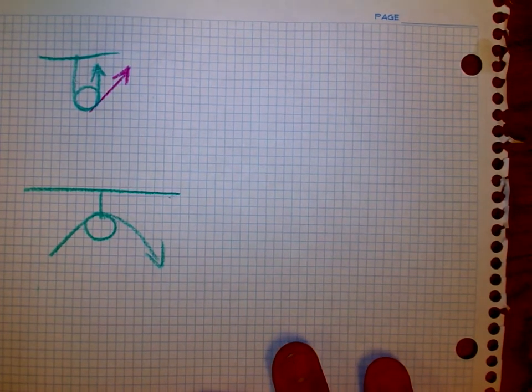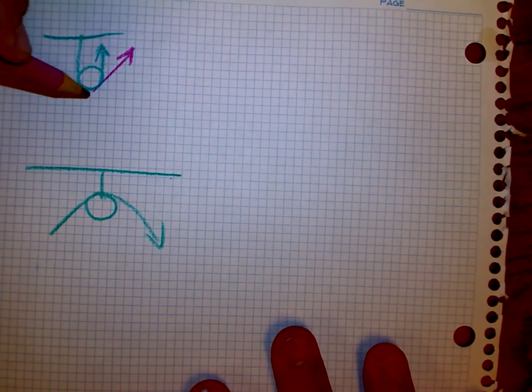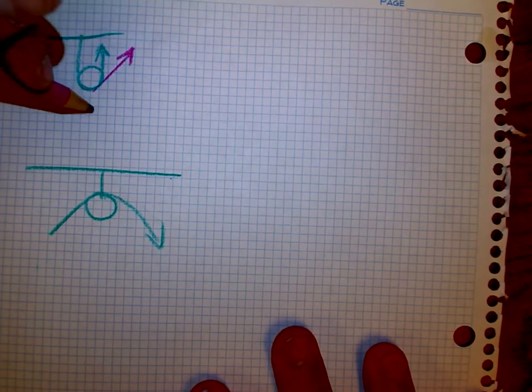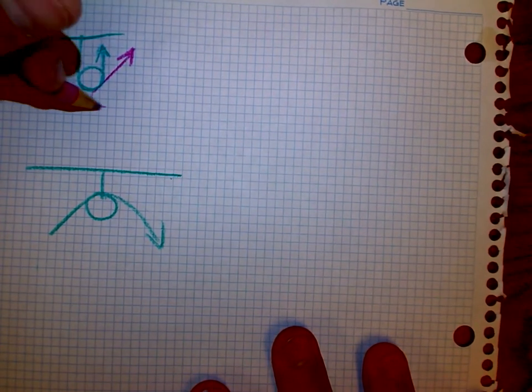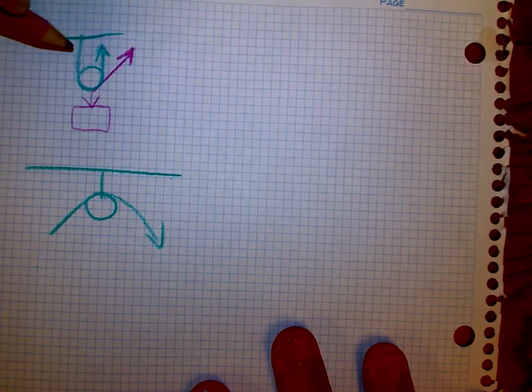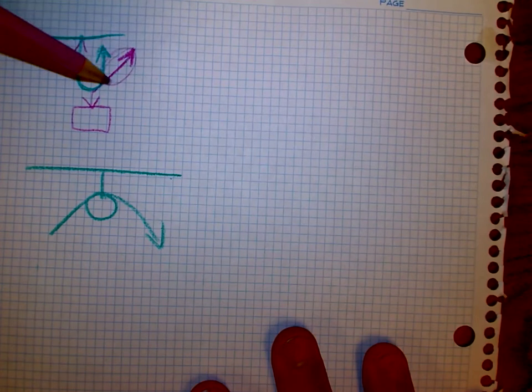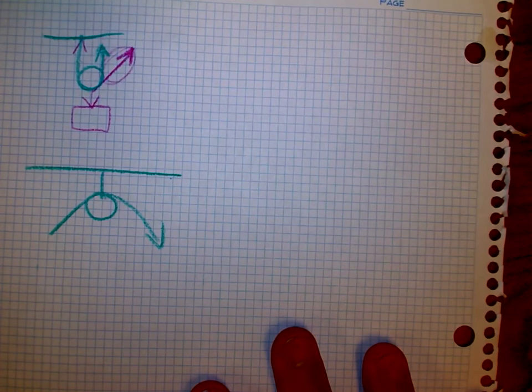And the answer is yeah, absolutely it does. Because if I'm talking about the number of strands that oppose the force, if I have something hanging here and it's pulling downward, then I'm interested in the strands that are pulling up. This one's pulling up definitely, but this one's kind of pulling up.